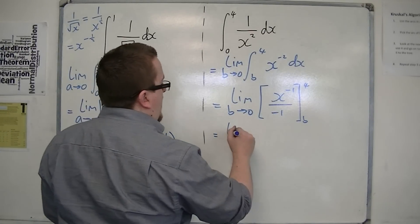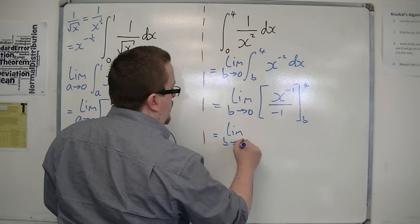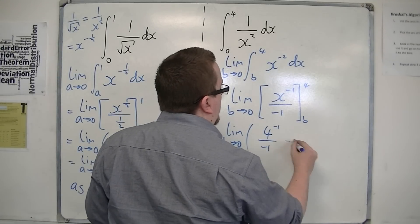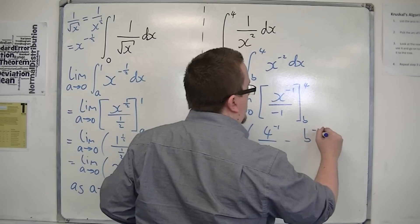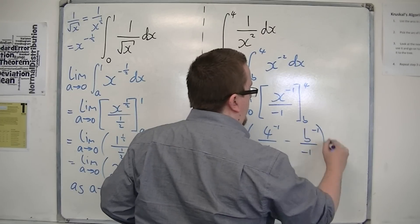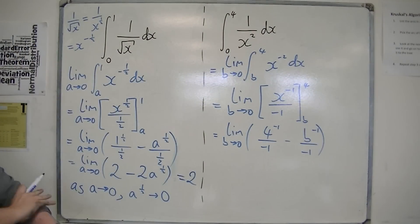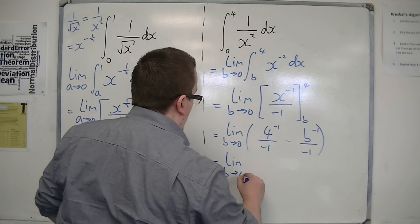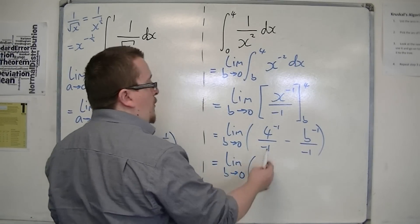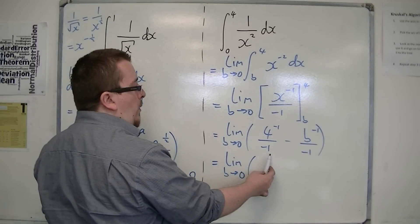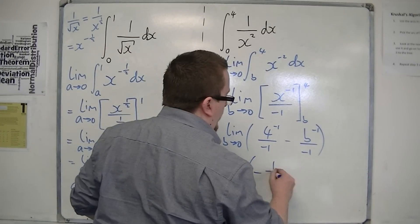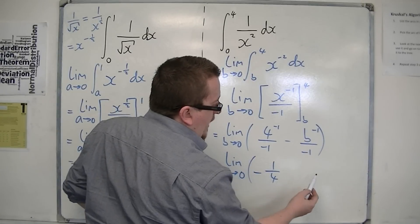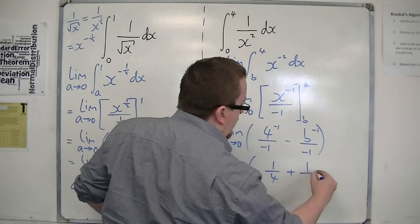we're going to get the limit as b tends to 0 of 4 to the minus 1 over minus 1, take away b to the minus 1 over minus 1. Now let's tidy that up. So 4 to the minus 1 over minus 1 is minus a quarter. And here we've got two minuses will cancel out, so we've got plus 1 over b.